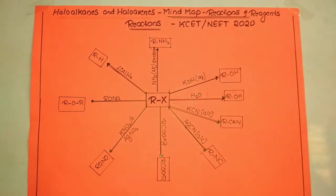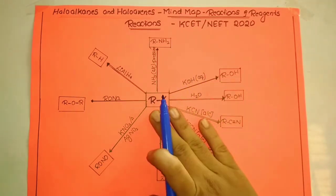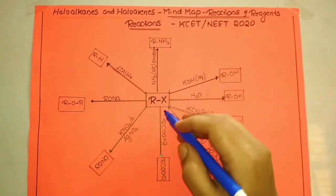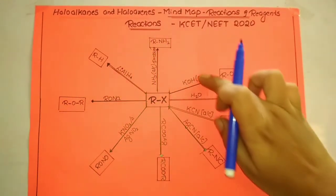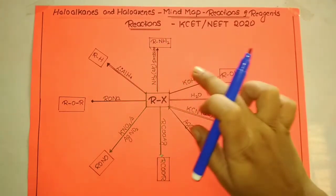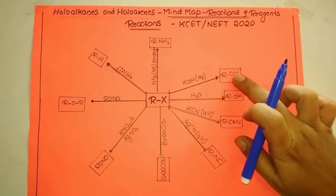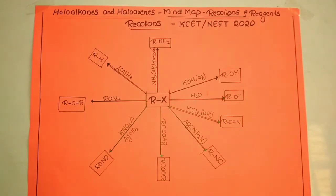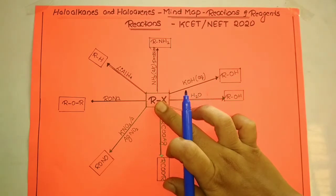Here you can see the alkyl halide or the aryl halide represented. When this alkyl halide reacts with given reagents, these are all the reagents mentioned — when it reacts with a particular reagent, we will get the corresponding product. This is how you need to go through it.